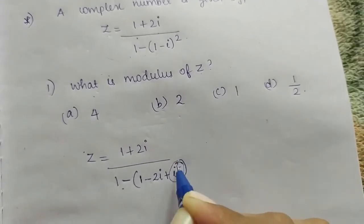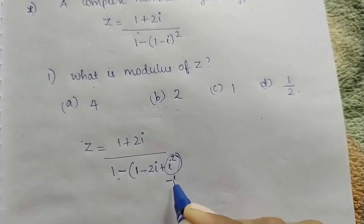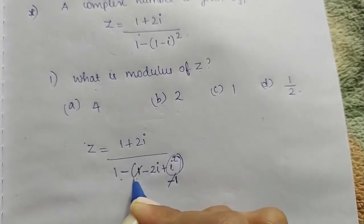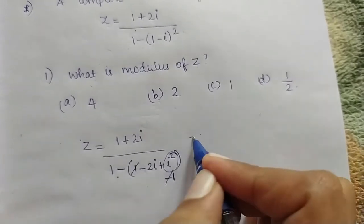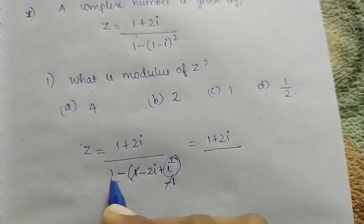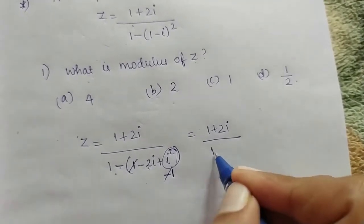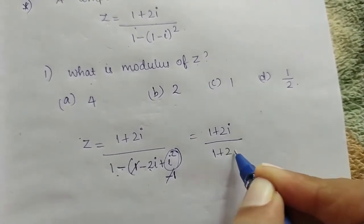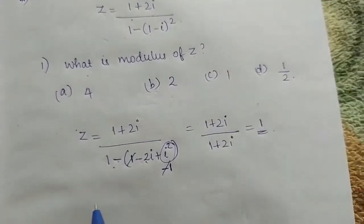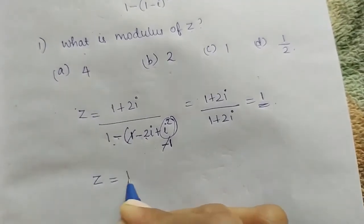Expanding using a minus b whole square formula: a squared minus 2ab plus b squared. Now, what is minus i squared? That gives minus 1, so the minus 1 and plus 1 cancel. We get 1 plus 2i divided by 1 minus minus 2i, which simplifies. So the complex number z equals 1.